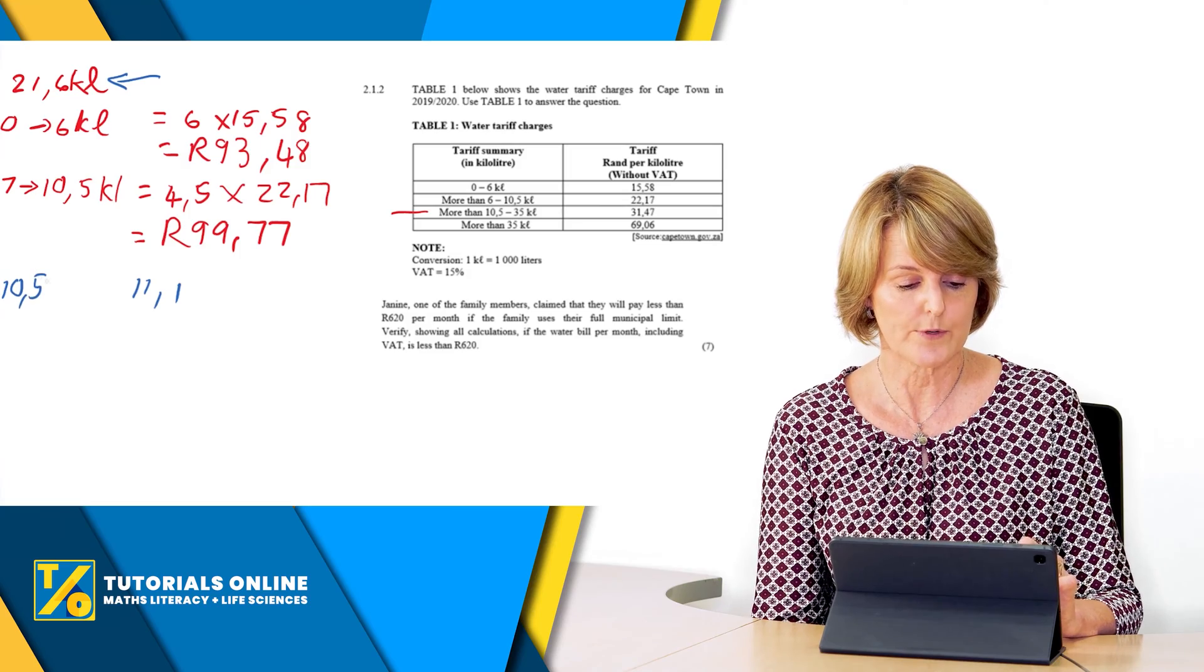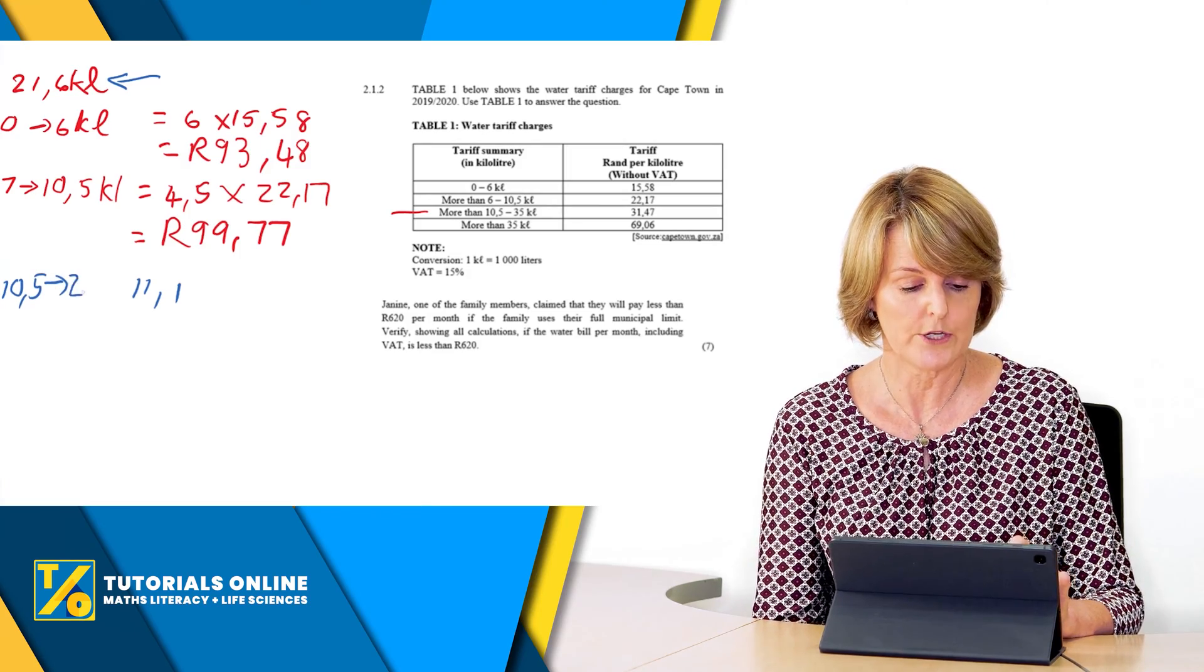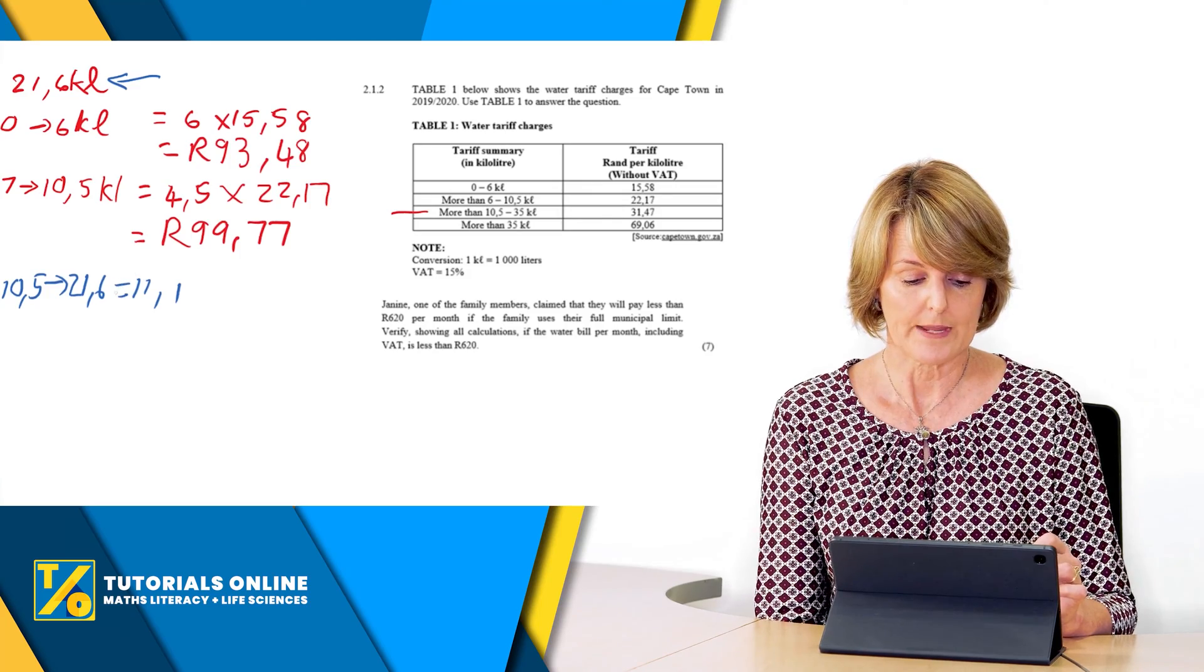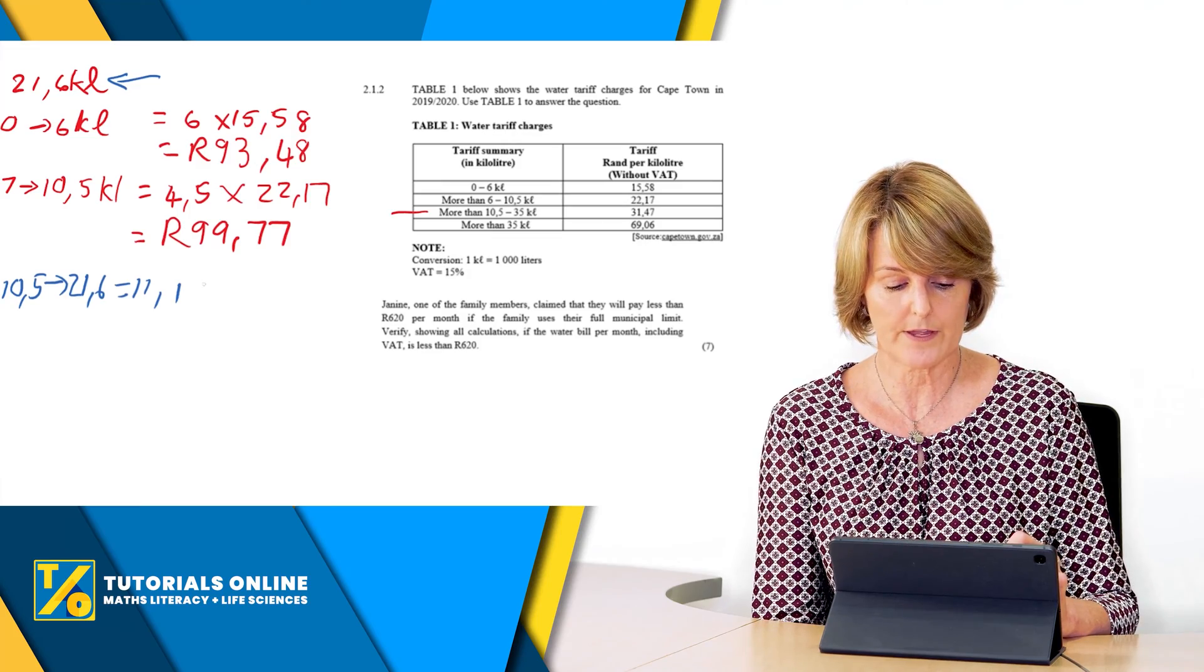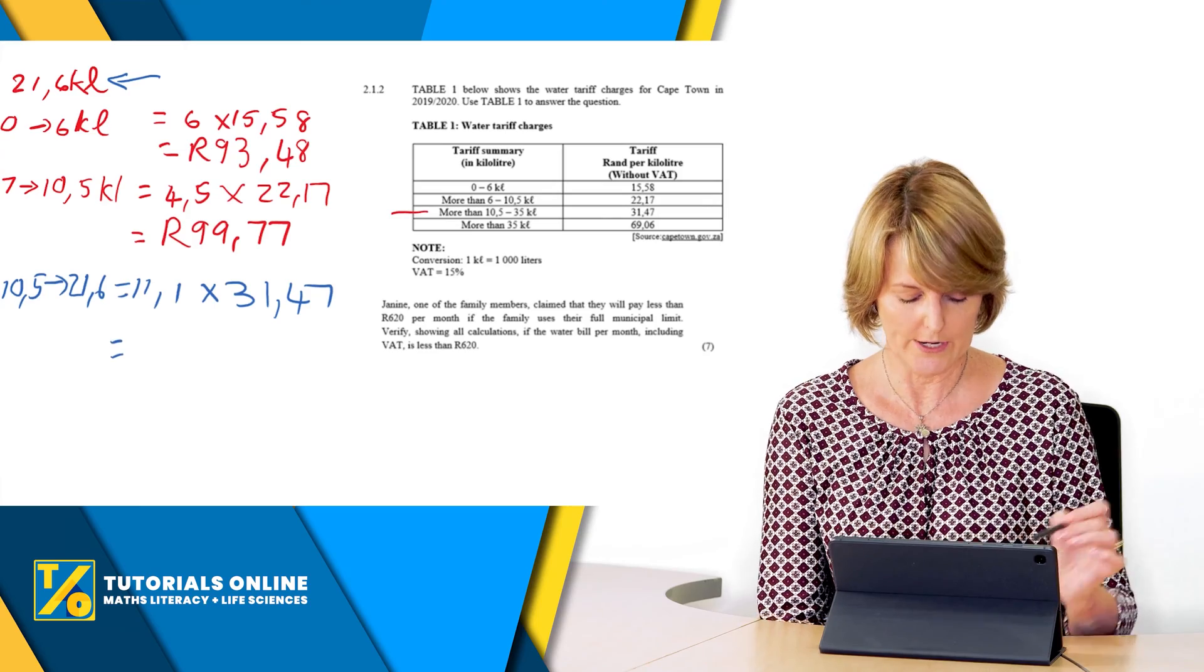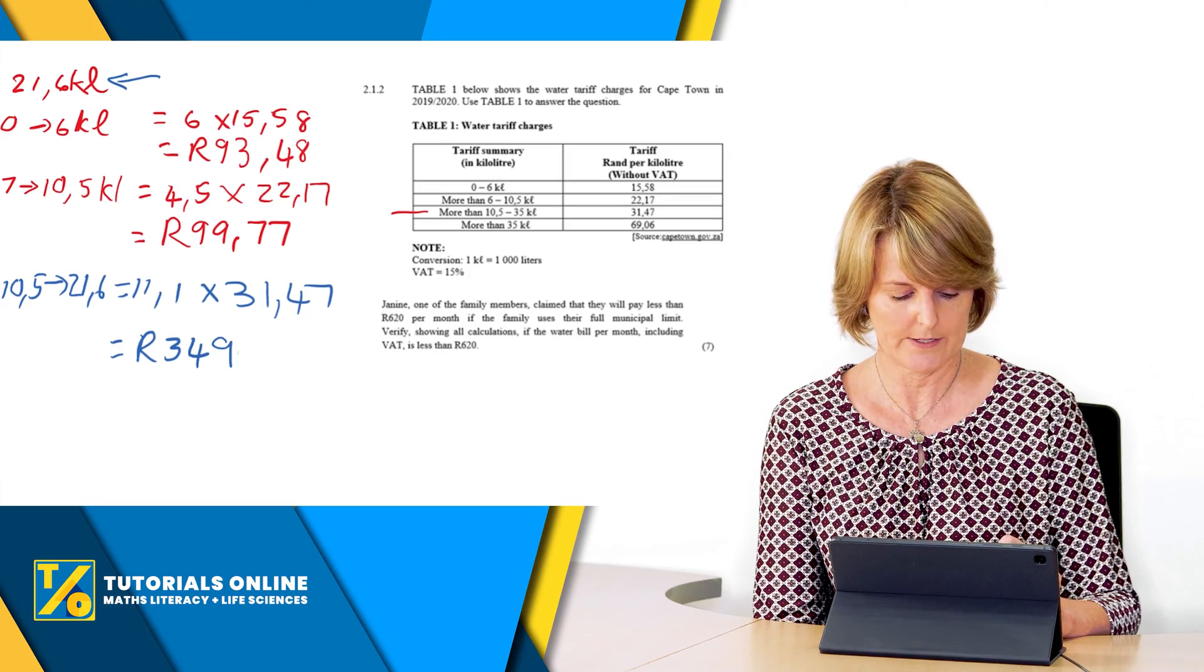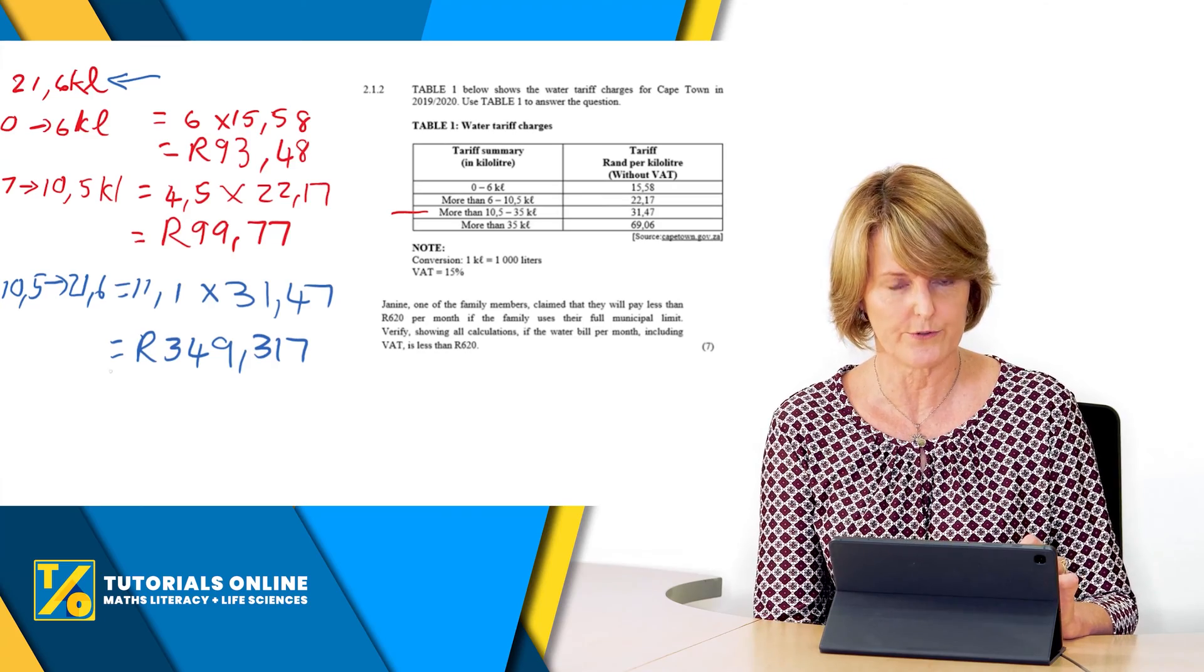21.6 minus 10.5, 11.1 is the answer here. Then you're going to say 11.1 times what is the tariff there, times 31 rand 47, and you do that calculation and you get an answer of, wow it's quite expensive, 349 rand 317. You get that on your calculator.